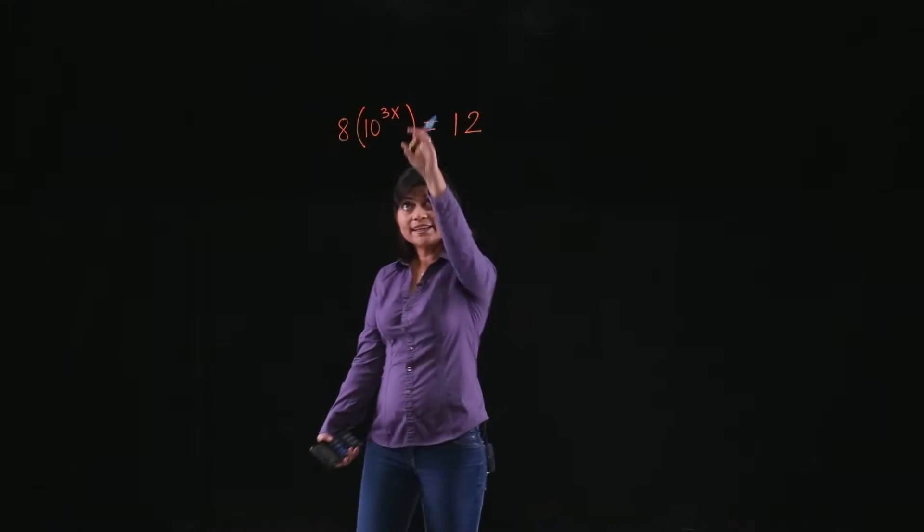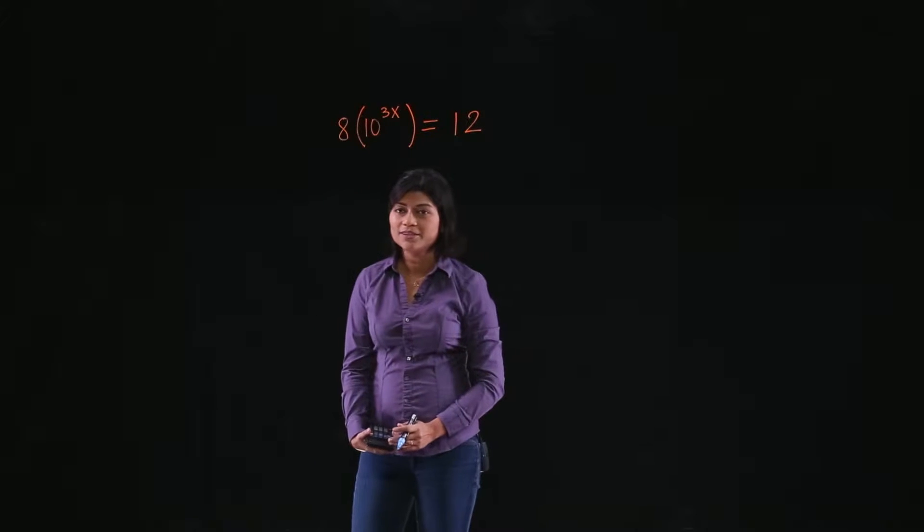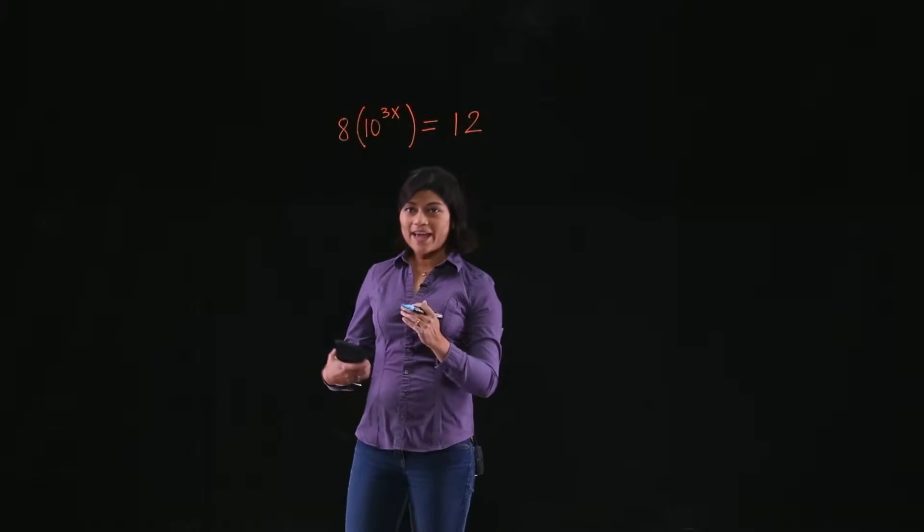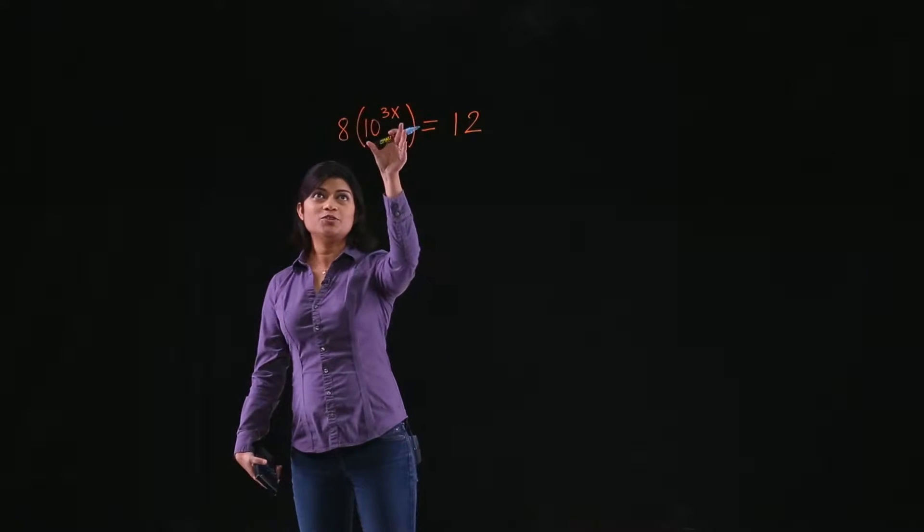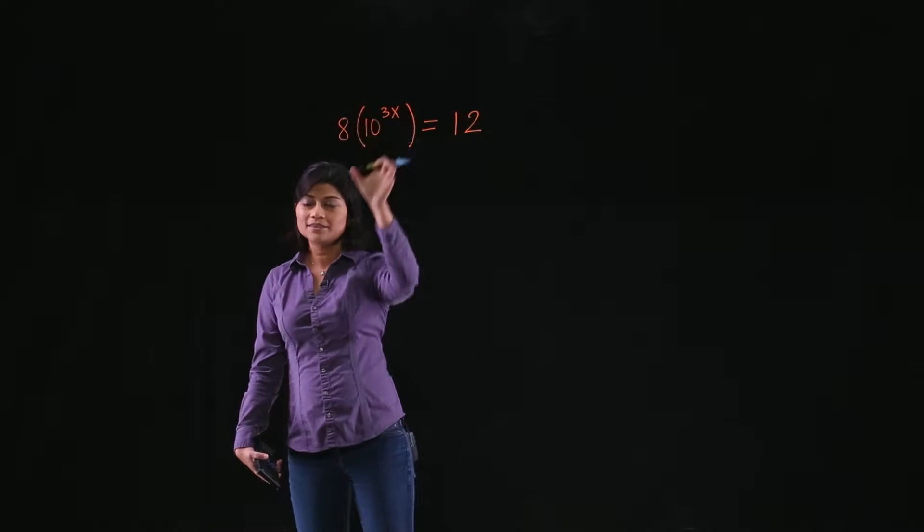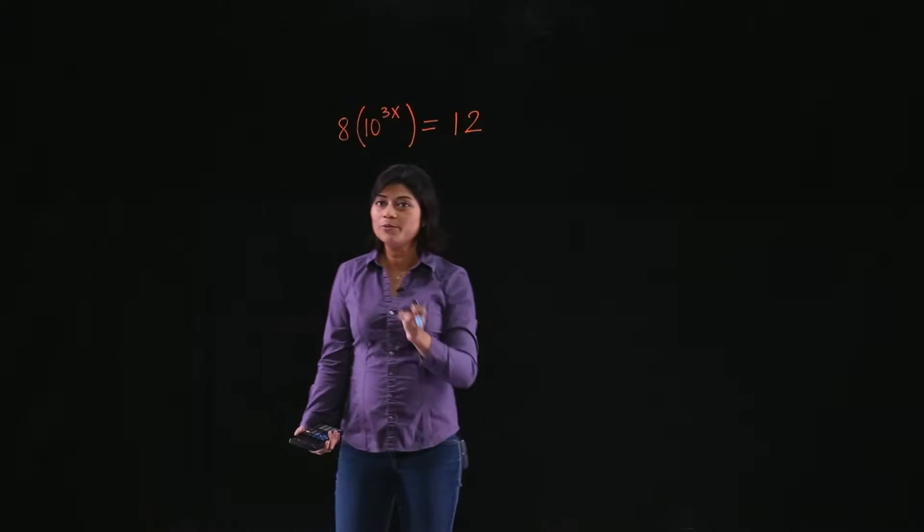So we have to bring that x down from the exponent in order to solve it. And you know that the logarithm function has a property that if you apply logarithm in front of this function, then the 3 times x can be brought down.